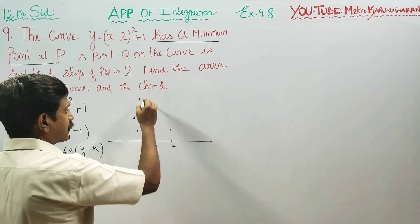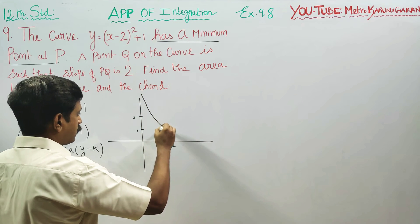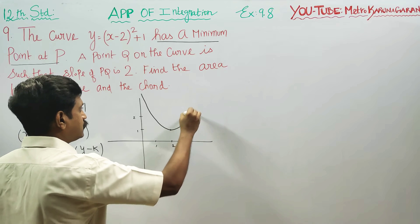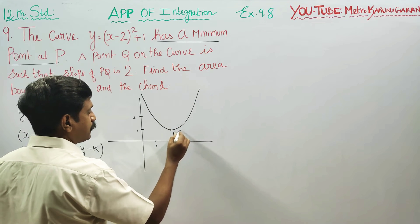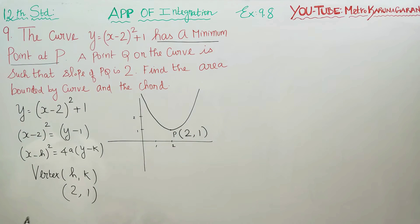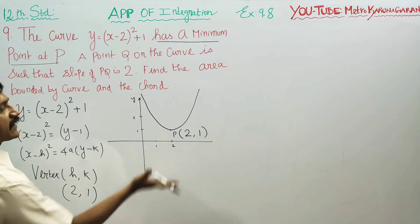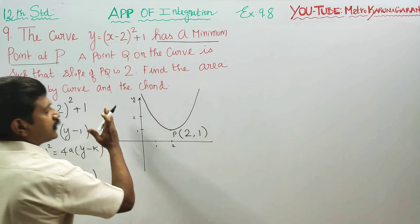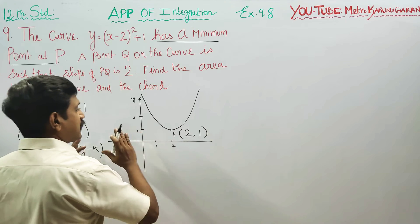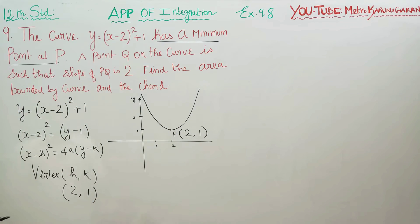We can draw the parabola passing through the minimum point P, which is at coordinates 2, 1. The parabola is symmetric about the y-axis and opens upwards. We have traced the curve.